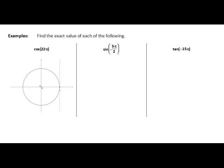Continuing back to the positive x axis will be 2 pi. Out to the negative x axis will be 3 pi. Back to the positive x axis will be 4 pi. Out to the negative x axis will be 5 pi. And what we're noticing is that all the odd multiples of pi occur out here at the negative x axis, at the point with coordinates (-1, 0).